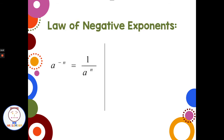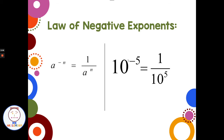Today we have the law of negative exponents. The law of negative exponents says that a to the negative n is equal to 1 over a to the nth. So by taking the base and the exponent and dropping it to the denominator, it will switch the sign of the exponent from negative to positive. For example, if we had 10 to the negative fifth power, that equals 1 over 10 to the fifth. The base stayed the same — 10 stayed 10 — but by dropping it to the denominator, the sign of the exponent switched from negative to positive.